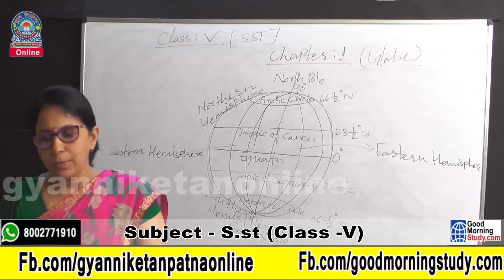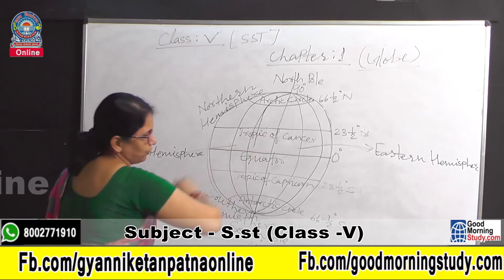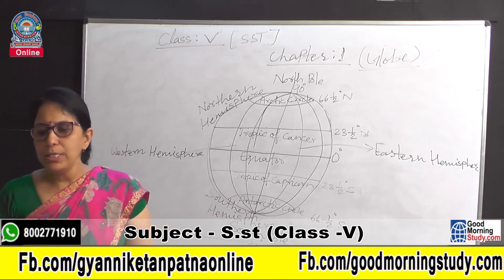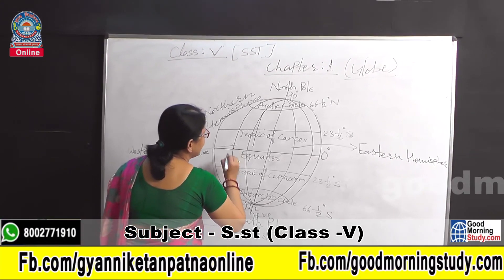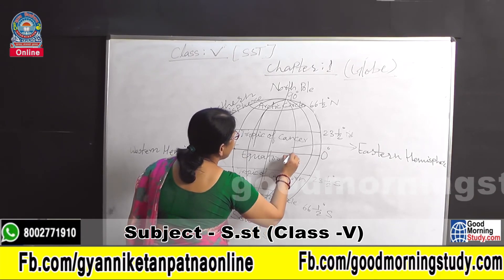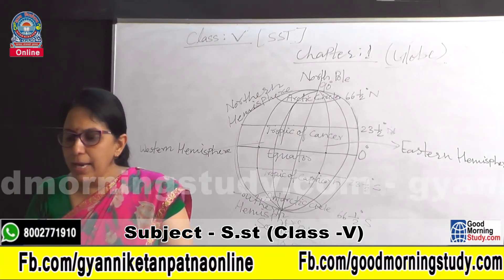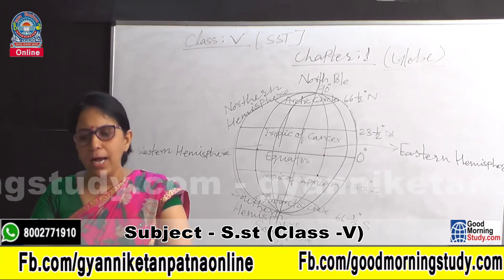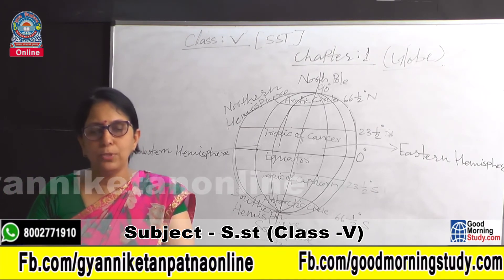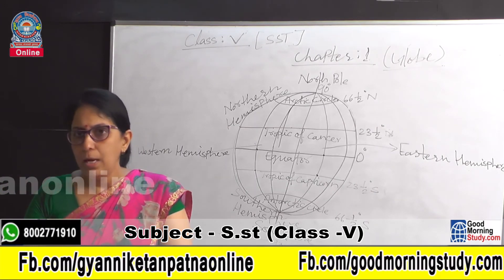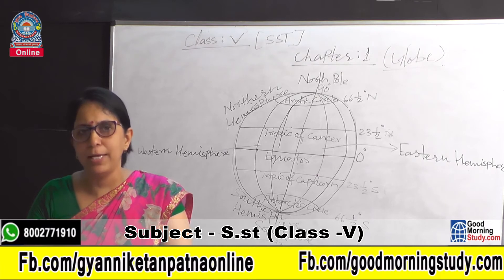What is a grid? The latitudes and the longitudes intersect each other at right angles to form a network of lines. This network is known as the grid. A grid also helps to locate any place on the Earth.